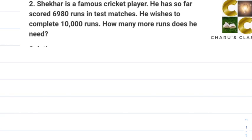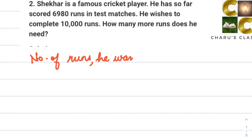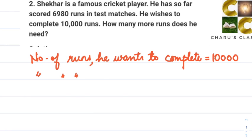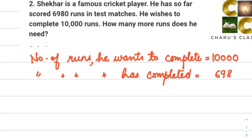Since it's a word problem, we have to write some statements. Number of runs he wants to complete is equal to 10,000 runs. And number of runs he has completed is equal to 6,980 runs.